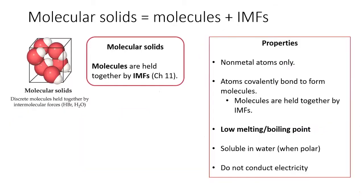We spent a good portion of chapter 11 talking about molecular solids. Molecular solids are made exclusively of non-metal atoms. These atoms are covalently bonded into discrete molecules, and these molecules are stuck together by intermolecular forces. Because IMFs are weaker than covalent bonds, molecular solids have relatively low melting and boiling points.